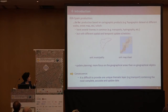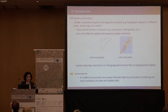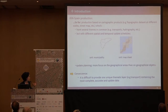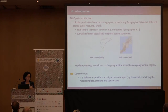Moreover, the update planning are more focused, depending on the case, but it's quite general that it is focused on updating geographical areas more than geographical objects. So the consequence is that it's really difficult to provide one unique thematic layer — in this case transport — containing the most accurate, the most complete, the richest and the most up-to-date data.